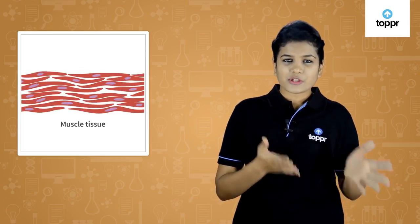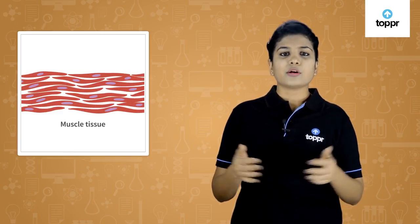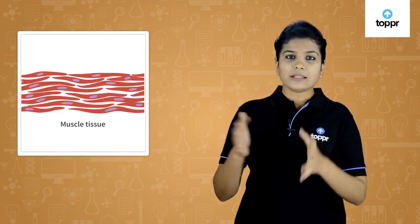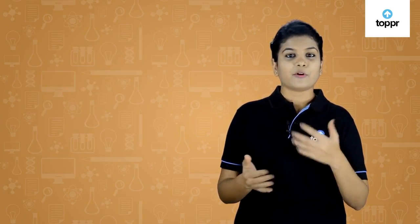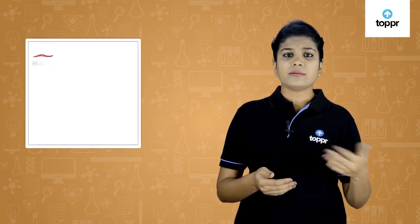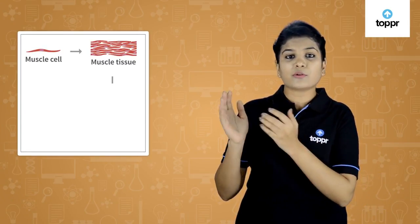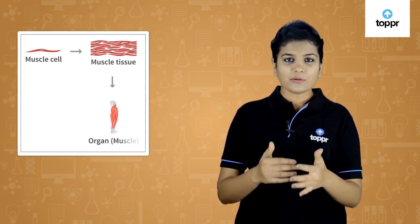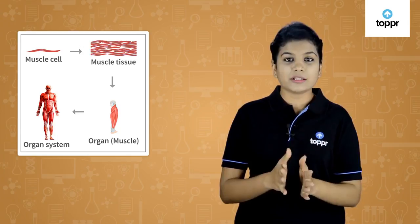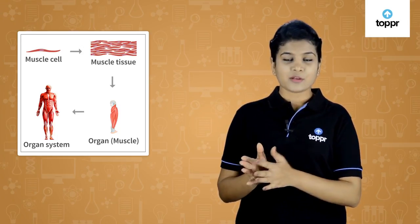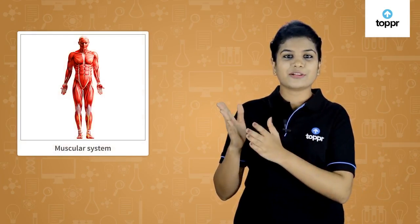These groups of cells are called tissues. Tissues collectively form an organ. For example, muscle cells combine to form muscular tissue, which then forms an organ, and finally these organs work together to form an organ system. This is how muscle cells form the muscular system.